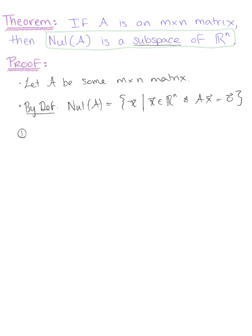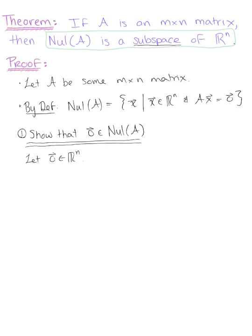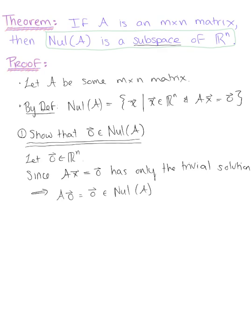The first property we need to show is that the zero vector is in the null space of A. We let the zero vector be in ℝⁿ. Since A times x equals the zero vector has at least the trivial solution, we know by definition that A times the zero vector equals the zero vector, which is in the null space of A. So our first case is shown — the zero vector lives in the null space of matrix A.